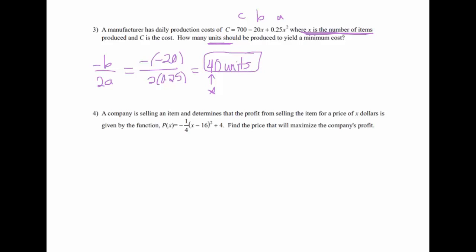If they had asked for the minimum cost, we would plug 40 back in for x to find what the minimum cost actually is — that's totally a possibility. You have to pay attention to what they're asking and what x and the other variable represent. Number 4 is in vertex form, and we want the price that maximizes profit — price is our x. Since it's vertex form, we change the sign of the inside to get 16. Price is in dollars, so the answer is $16. You could also graph both of these on the calculator to find max or min — either way is fine.